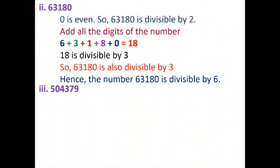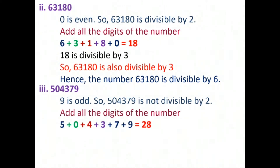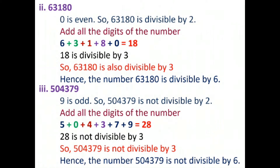Now question number 3: 504379. We check if it is divisible by both 2 and 3. The last digit is 9, which is odd, so it is not divisible by 2. Adding all the digits gives 28, and 28 is not divisible by 3. Since the number is not divisible by both 2 and 3, 504379 is not divisible by 6.